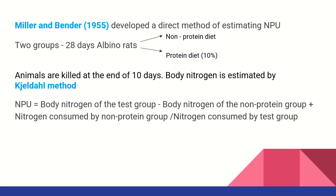Miller and Bender in 1955 proposed the same concept. Albino rats are divided into two groups — protein diet and non-protein diet. When you use the 14th-day method, body nitrogen is estimated by the nitrogen method.